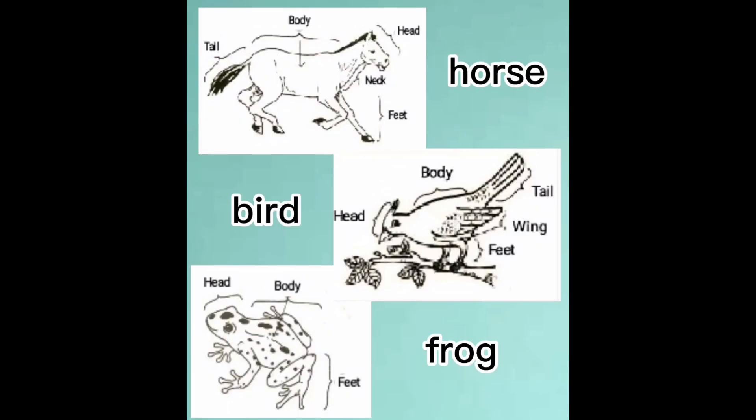Look at the picture of a horse, bird, and frog. What external parts do they have in common? What external parts do they differ? The three animals have a head, body, and feet. Horse and birds have a tail. Birds have wings.